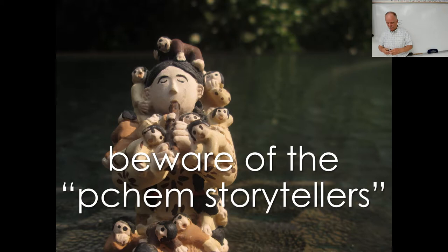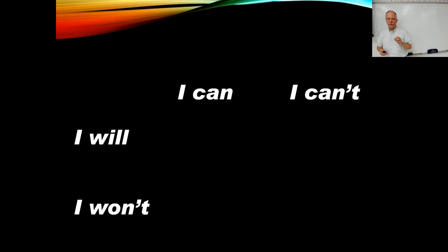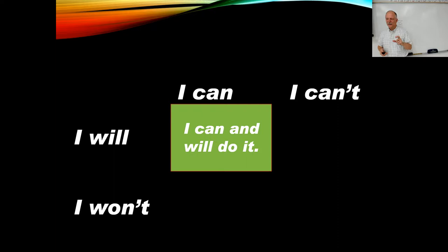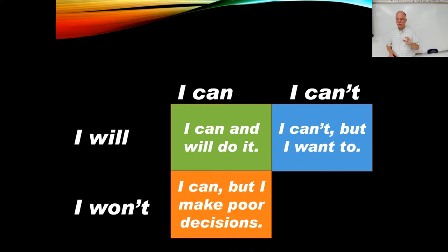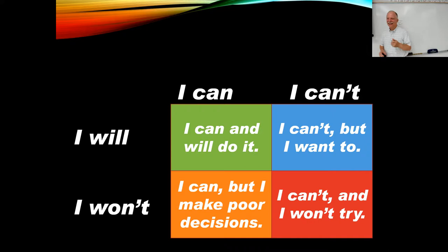And then this is the key to success. I can or can't, I will or won't. This block is the best. I can do it and I will do it. This one is not as good. I can't do it, but I want to. I can, but I make poor decisions. I can't and I won't. I won't even try. And so my goal is to make the wants up to the wills by talking about decisions, mentoring you and so on. And then also eventually moving you from the can't to the can. That would be my goal is to move everybody up into that upper left box so they can do it and they will do it.